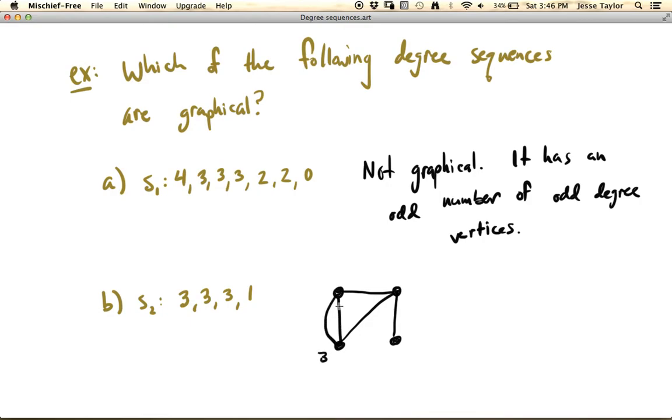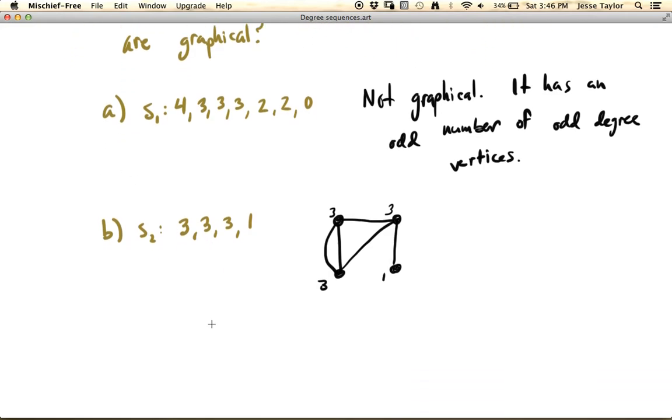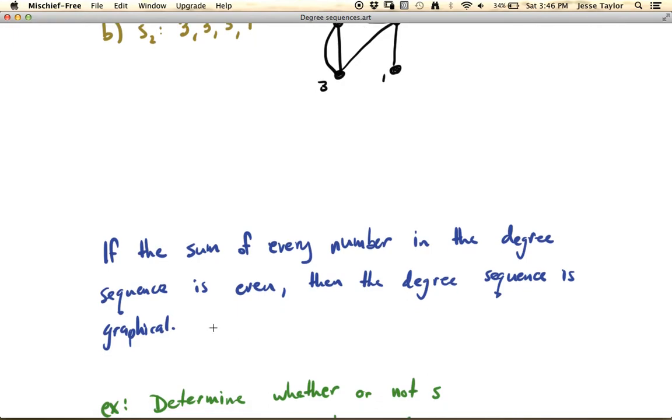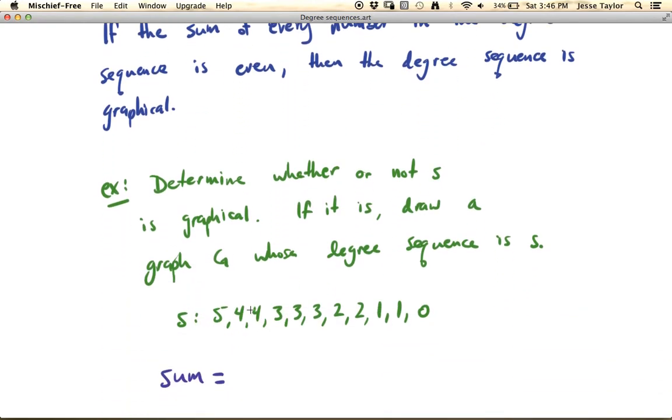So three, three, three, one. And this isn't the only graph, so you may have drawn something differently, and that's okay. And it turns out that that's really the only test to determine whether something is graphical or not. So if you take the sum of every number in the degree sequence, and you get something that's even, or in other words, if you have an even number of odd degree vertices, then it's going to be graphical. Your degree sequence is going to be graphical.